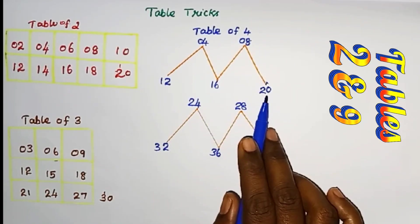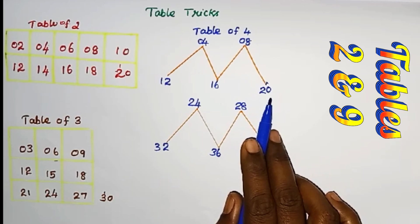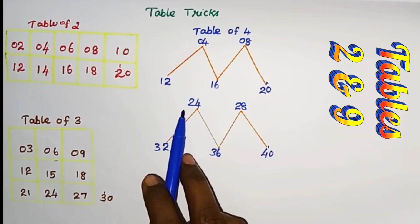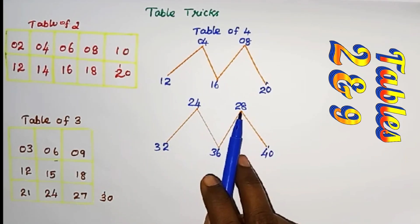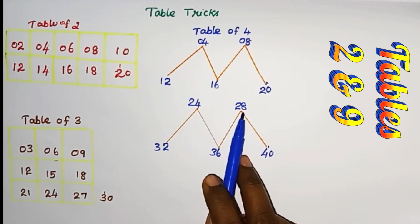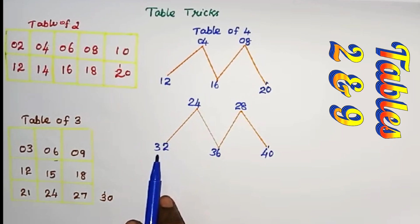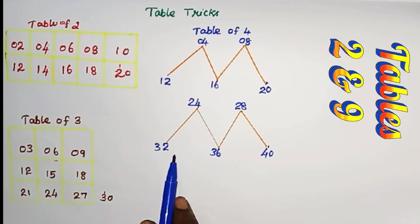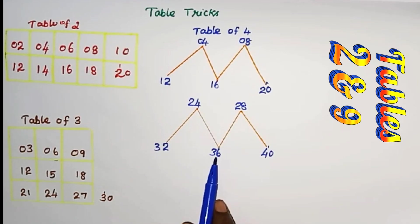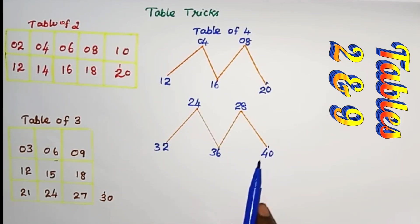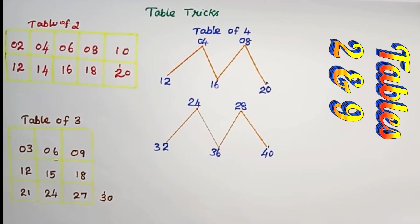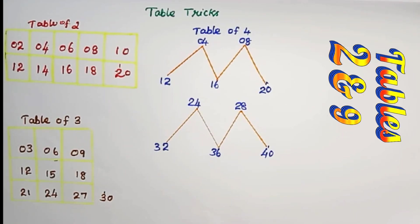4 4's are 16. 5 4's are 20. 6 4's are 24. 7 4's are 28. 8 4's are 32. 9 4's are 36. 10 4's are 40.